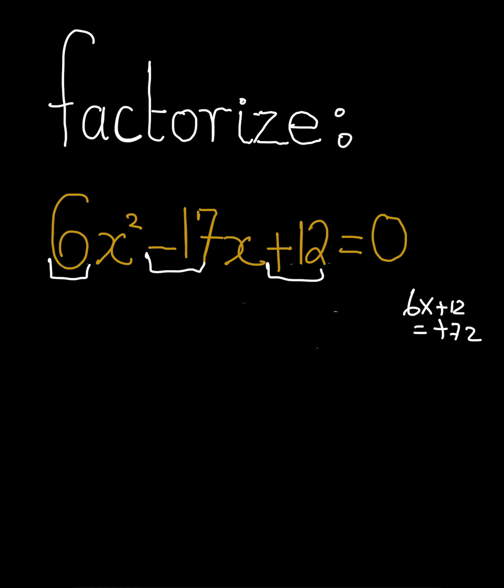Remember, the sign in front of 17 is minus. And if you look at it carefully, the numbers is negative 9 times negative 8. We get positive 72. Minus 9 plus minus 8, when we add it, we get minus 17. I hope that is clear.